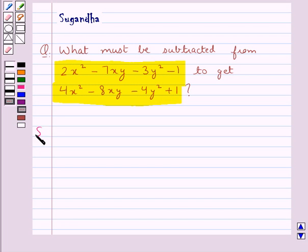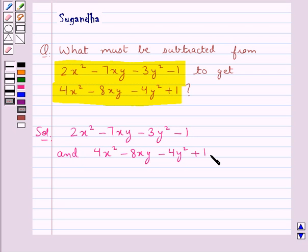Let's move on to the solution. We have two algebraic expressions given to us: 2x² - 7xy - 3y² - 1 and 4x² - 8xy - 4y² + 1.